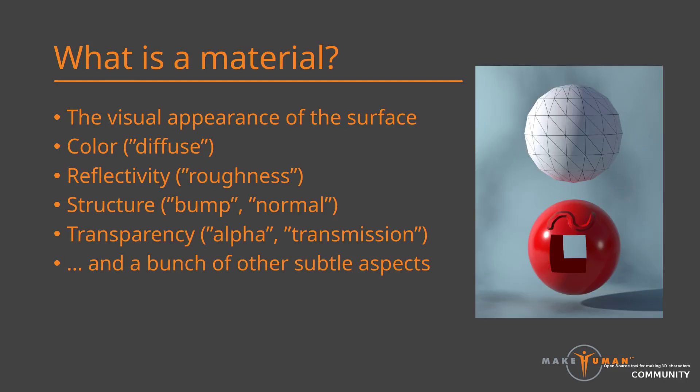When working with 3D, the visual appearance of a 3D object largely derives from two different sources. The first and most obvious is the geometry of the mesh — the vertices and the faces. The second is the material. The material is what gives the object's surface its appearance. For example, if you have a red sphere, then the sphere is the mesh and red is the material. In the image to the right you can see the same mesh with and without a material.